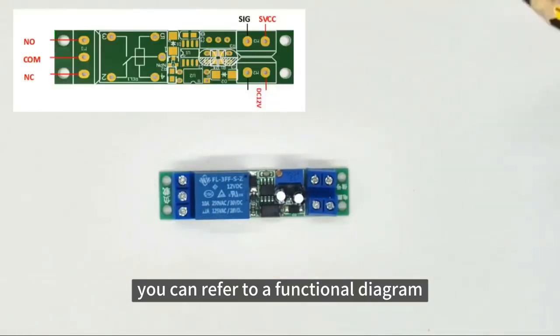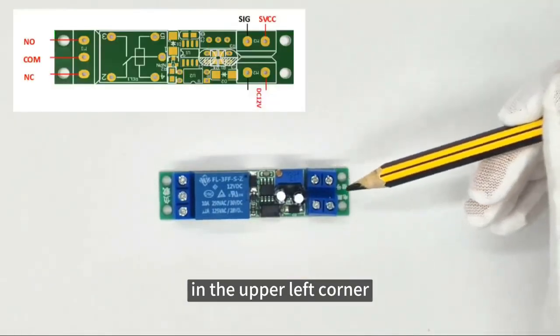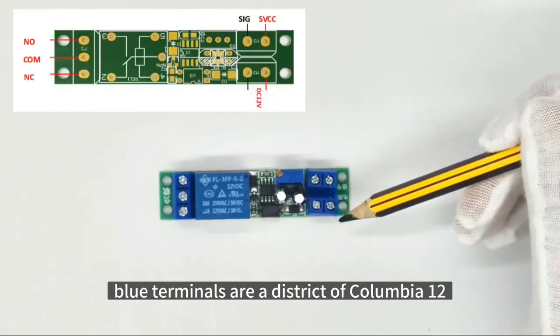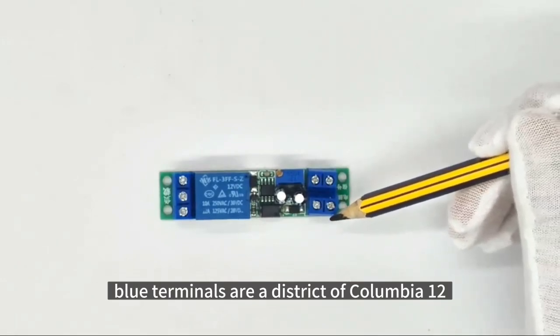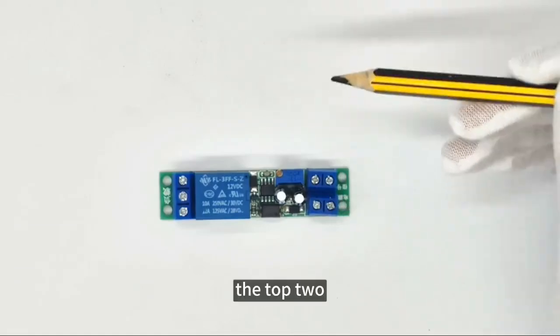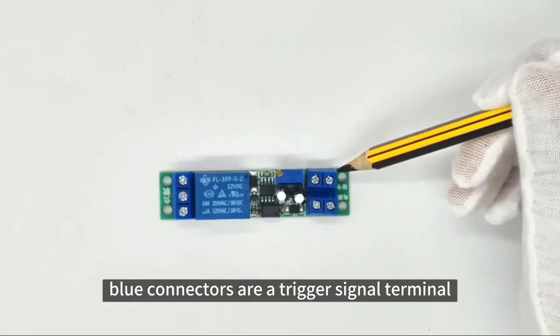You can refer to a functional diagram in the upper left corner. The following two blue terminals are a DC 12 volt power supply. The top two blue connectors are a trigger signal terminal.